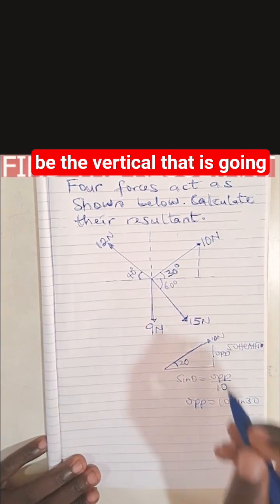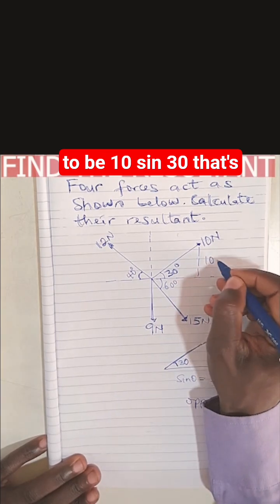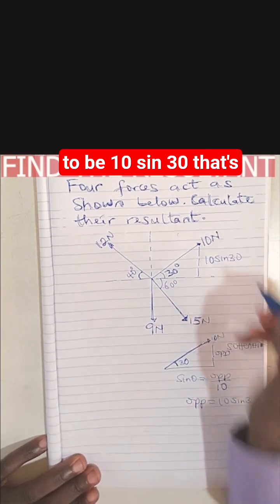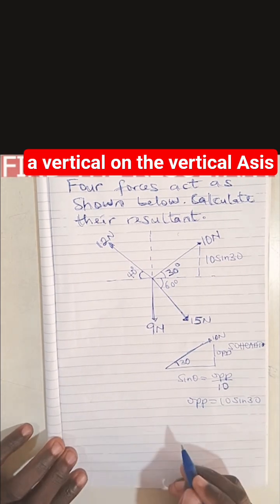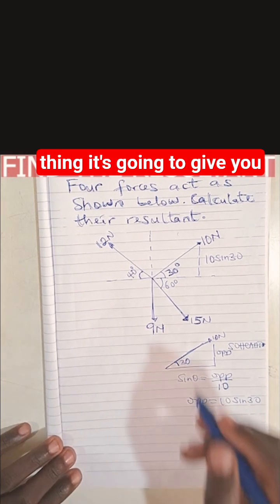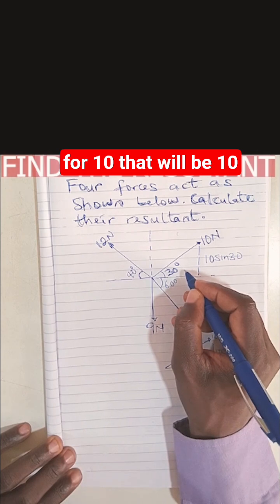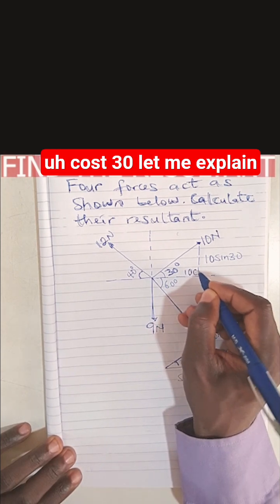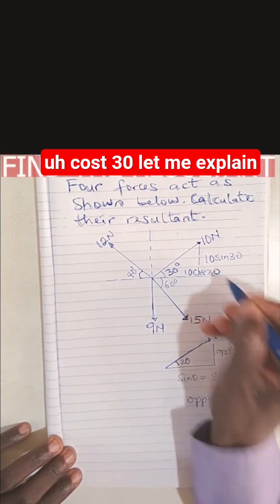On the vertical and on the horizontal, do the same thing. For the 10 Newton force, the horizontal component will be 10 cos 30.